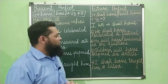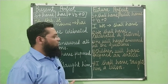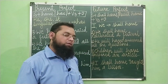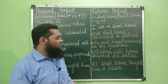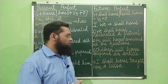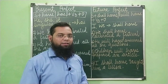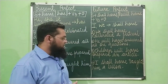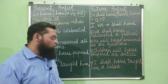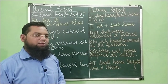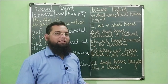Second: 'He will not have answered all the questions' or 'He will have not answered all the questions.' Third: 'Children will not have prepared an article' or 'Children will have not prepared an article.' Next: 'I shall not have taught him a lesson' or 'I shall have not taught him a lesson.' In this way you can convert these sentences into negative sentences.